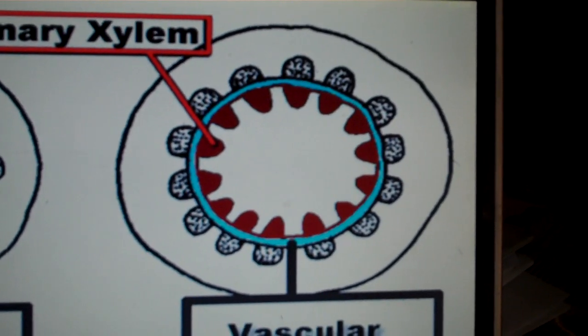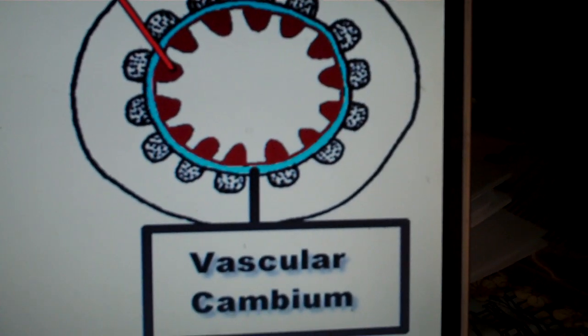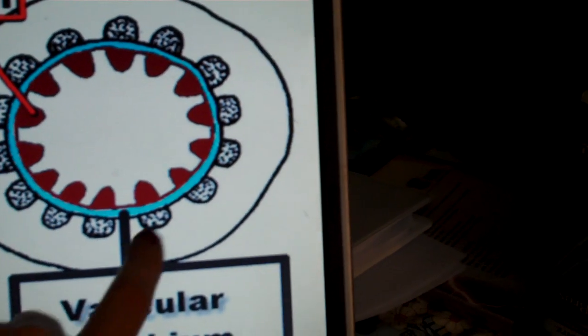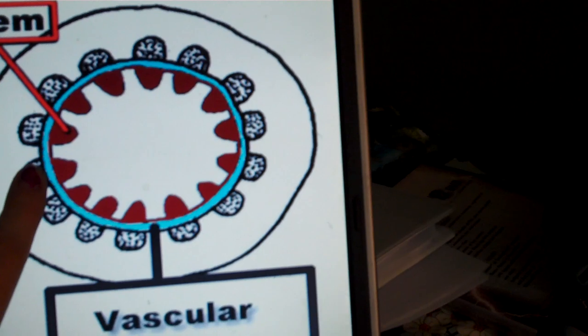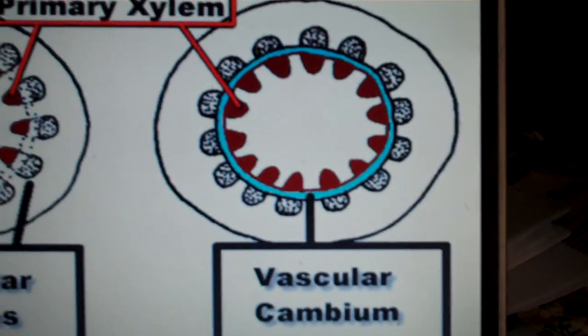In older parts of stems or roots, a vascular cambium may form. This is very common in woody plants and helps increase the plant in size, girth, or width.